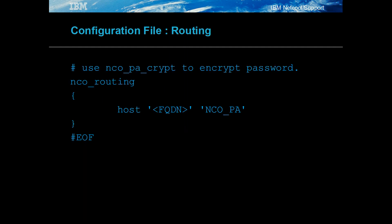The routing section is used to make NCO_PAD processes aware of each other to allow interaction. Because of this, it is recommended that all of the processes and services are defined uniquely. For this example, the routing is defined for just the local process control process with no user limitations.